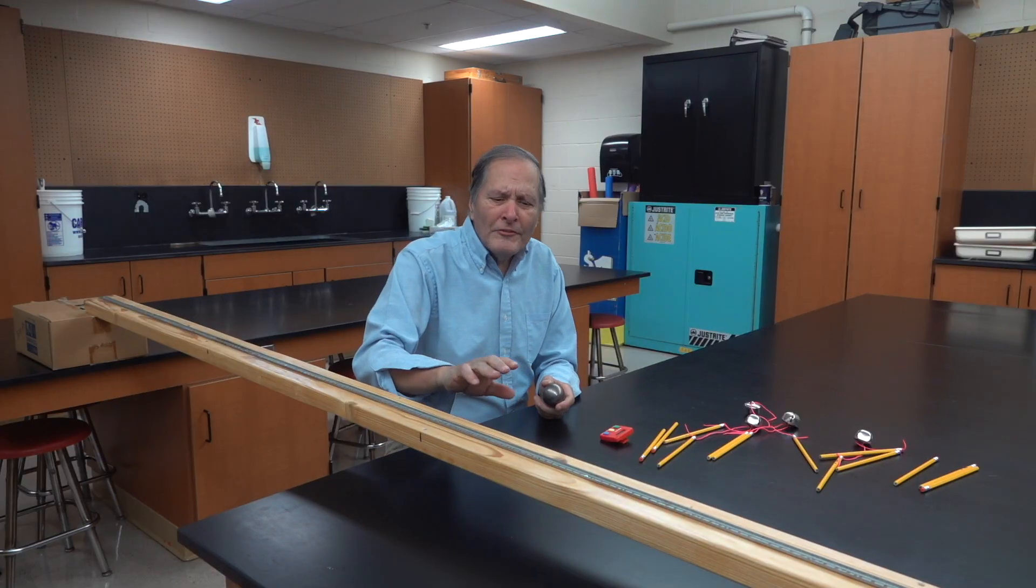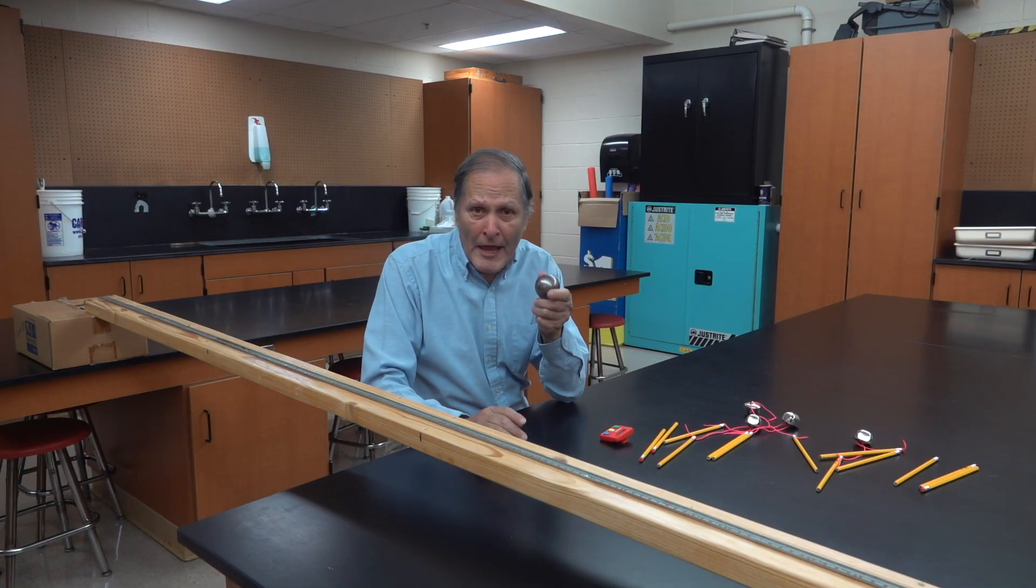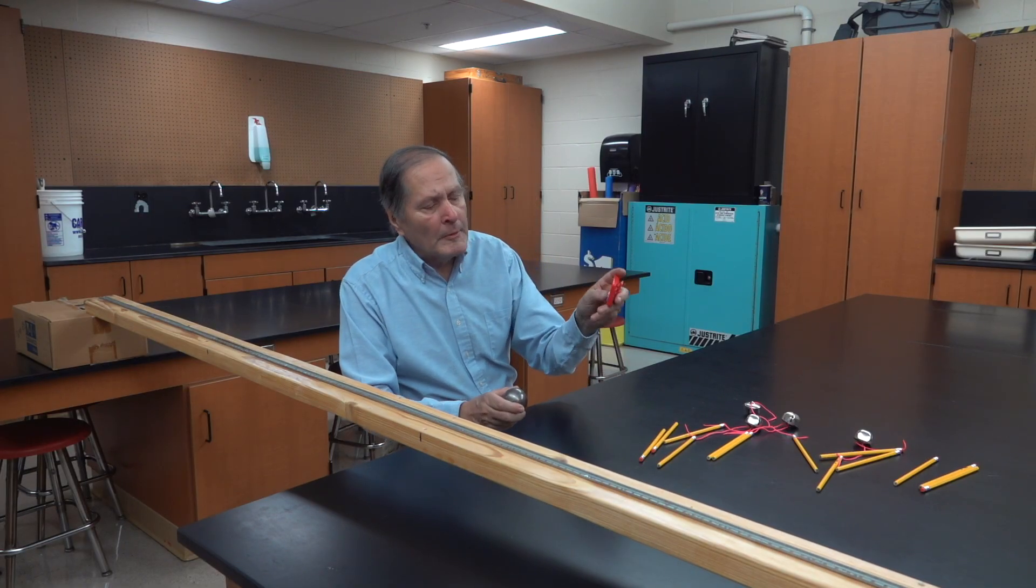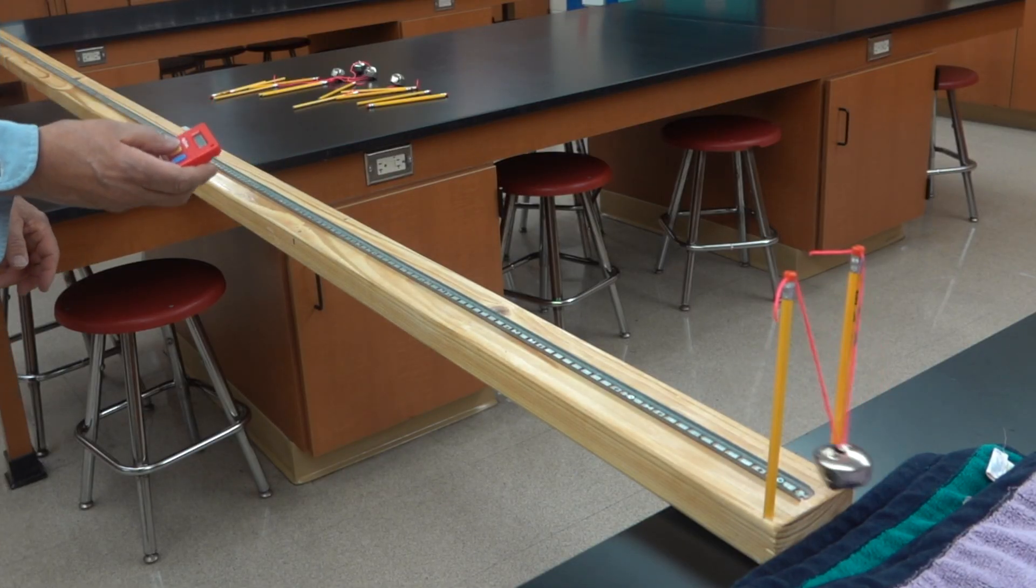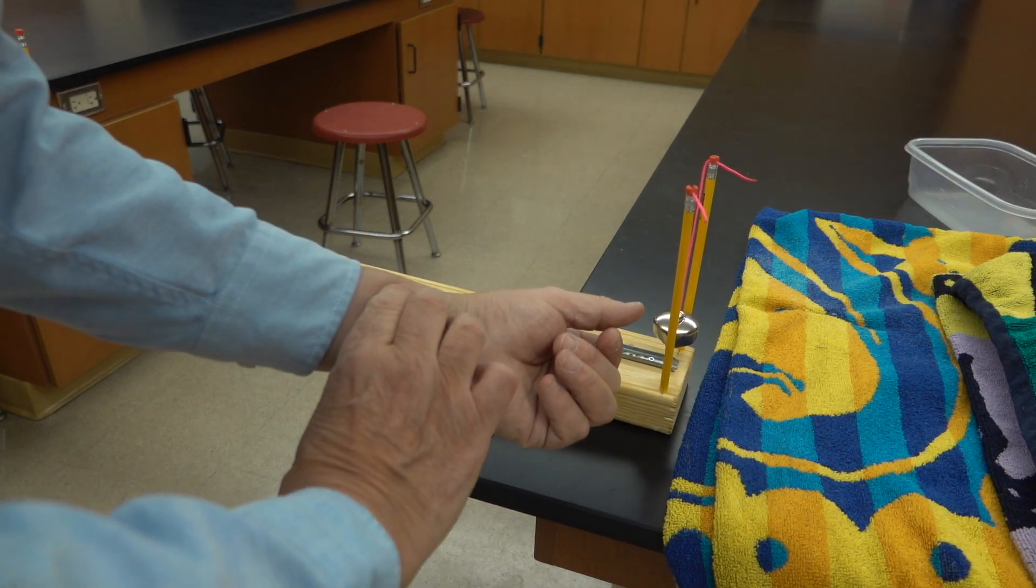Now Galileo easily could have had a wooden track made that a metal ball could roll down. His problem, however, would have been trying to time it. Since stopwatches weren't available, Galileo would have had to figure out other ways to time his experiments, such as using his pulse.